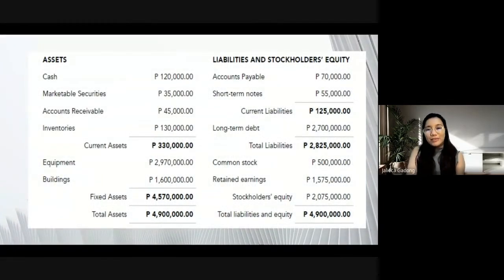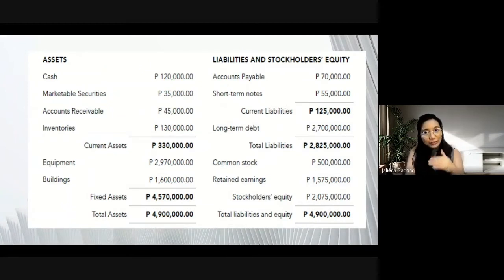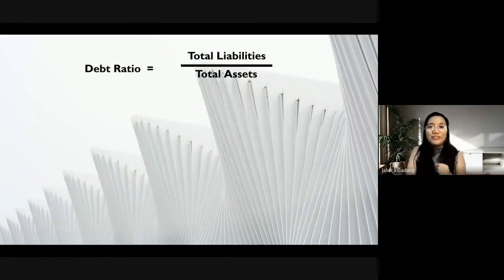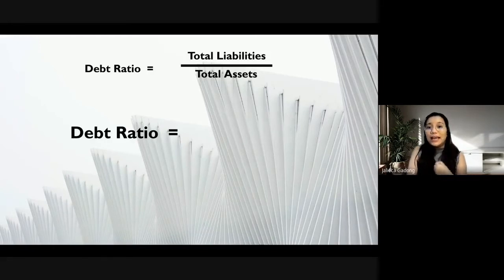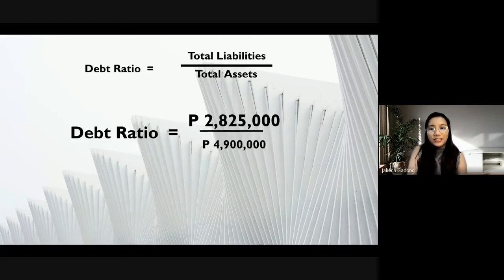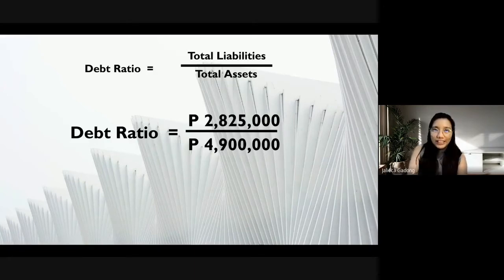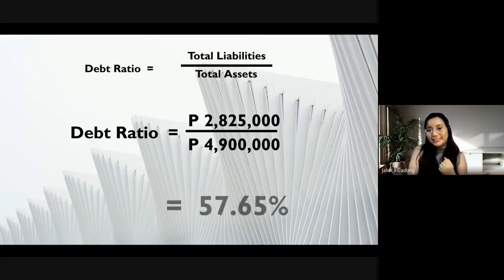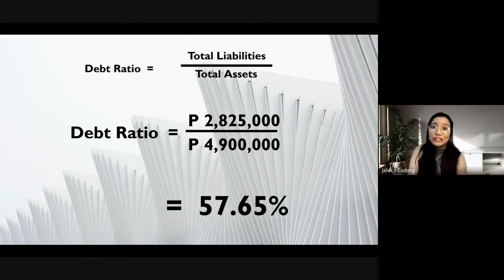To understand this better, here is a sample balance sheet showing assets, liabilities, and stockholders' equity. Take note of the total amounts, as these will be used in the formulas. Solving for the debt ratio by dividing total liabilities by total assets — substituting the amounts — we have $2,825,000 for total liabilities and $4,900,000 for total assets, giving us 57.65%.